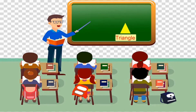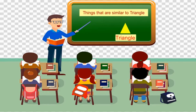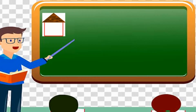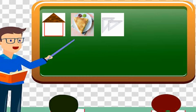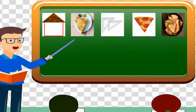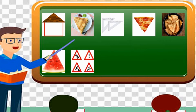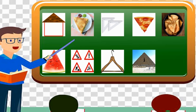Triangle: T-R-I-A-N-G-L-E. A triangle has three sides and three angles. Things that are similar to a triangle are: roof of a house, slice of a sandwich, set squares, slice of pizza, tortilla chips, slice of watermelon, signboard, hanger, side of a pyramid, sailboat.